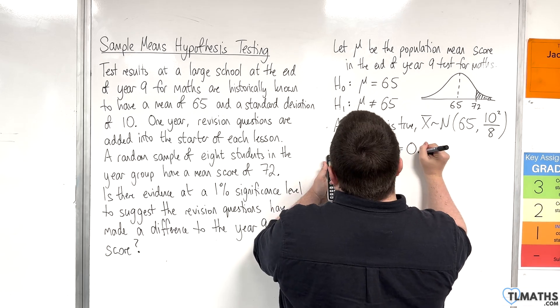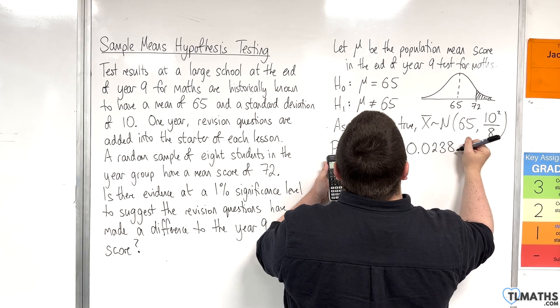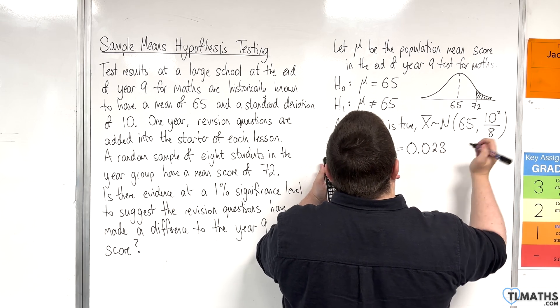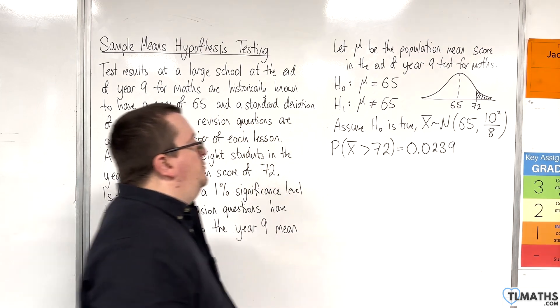So, we get 0.023857, so let's round that to 4 decimal places, so 0.0239 to 4 decimal places.